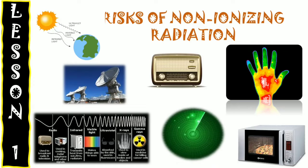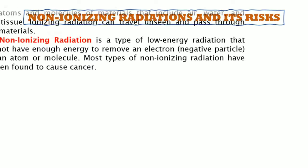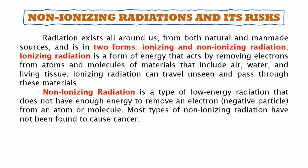Let's proceed now to Lesson One: the risk of non-ionizing radiation. Radiation exists all around us from both natural and man-made sources and comes in two forms: ionizing and non-ionizing. Ionizing radiation is a form of energy that acts by removing electrons from atoms and molecules of materials including air, water, and living tissue, and can travel unseen and pass through these materials. Non-ionizing radiation is a type of low-energy radiation that does not have enough energy to remove an electron from an atom or molecule. Most types of non-ionizing radiation have not been found to cause cancer.